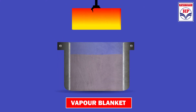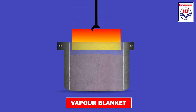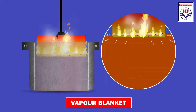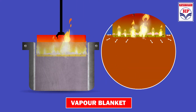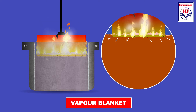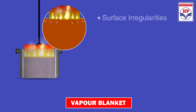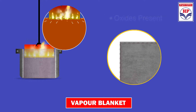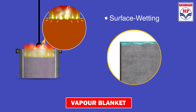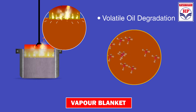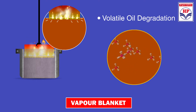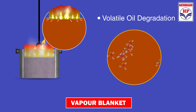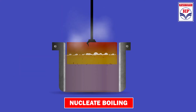When using quench oil to cool hot metal, a vapor blanket is placed around the hot metal when it is first immersed into the oil. The stability of the vapor layer and thus the ability of the oil to harden steel is dependent on the following factors: metal's surface irregularities, oxides present, surface wetting additives which accelerate the wetting process and destabilize the vapor blanket, and the quench oil's molecular composition, including the presence of more volatile oil degradation byproducts.